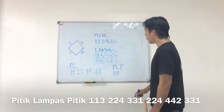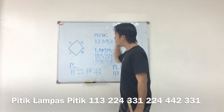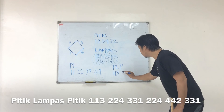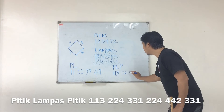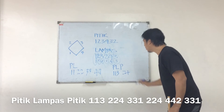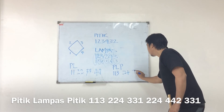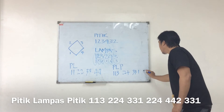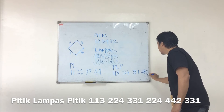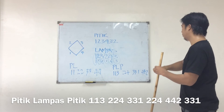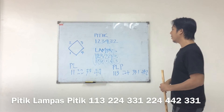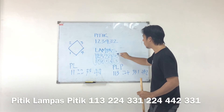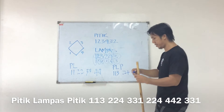For pitik-lampas-pitik, the combinations are: one one three, two two four, three three one, four four two. But the sequence is going to be one two three two four three.